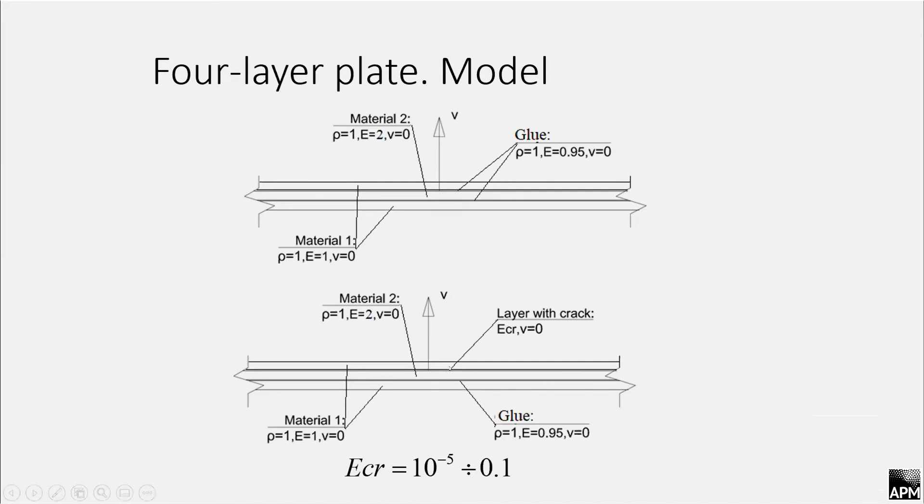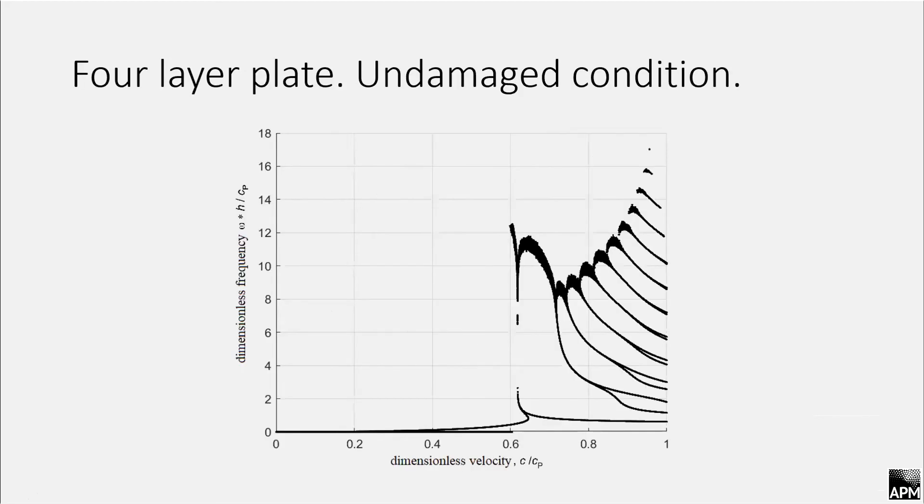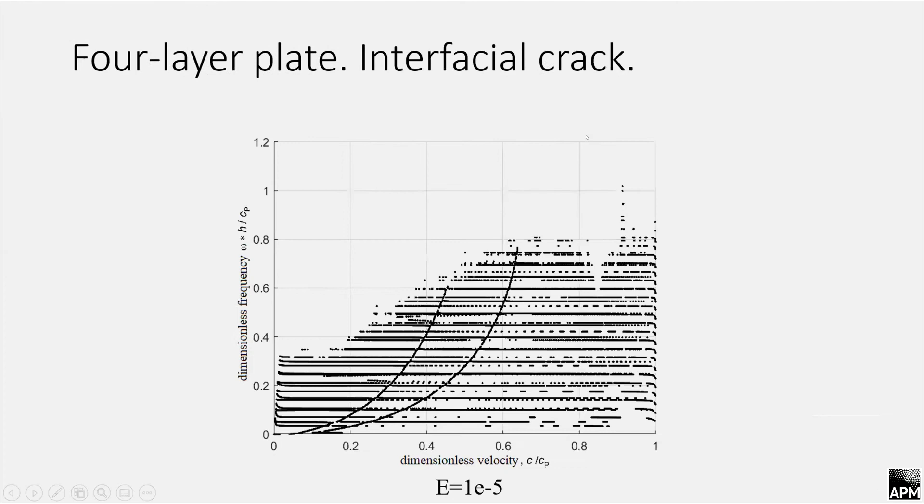After interfacial crack took place here in the first glue layer, its value of Young's modulus varied from 10^-5 to 0.5. As a result, we can see dispersion curves for undamaged conditions and dispersion curves when interfacial crack takes place.